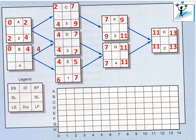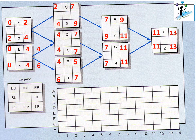For Activity B, the path from D indicates a late finish of four and the path from Activity E shows a late finish of six. We choose the smallest value during the backward pass, so we choose four as the late finish time. The late start time is four minus four, which is zero. That completes our forward pass and backward pass.